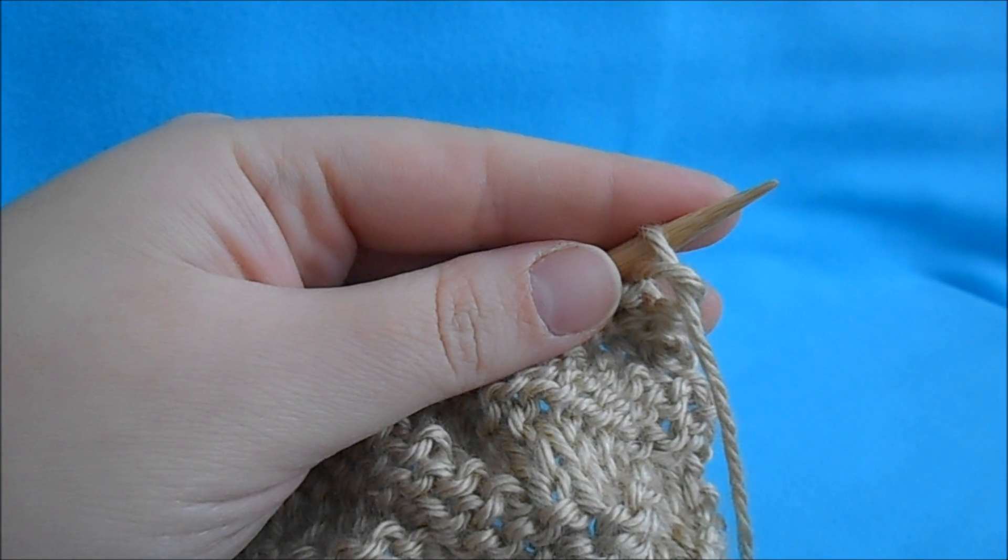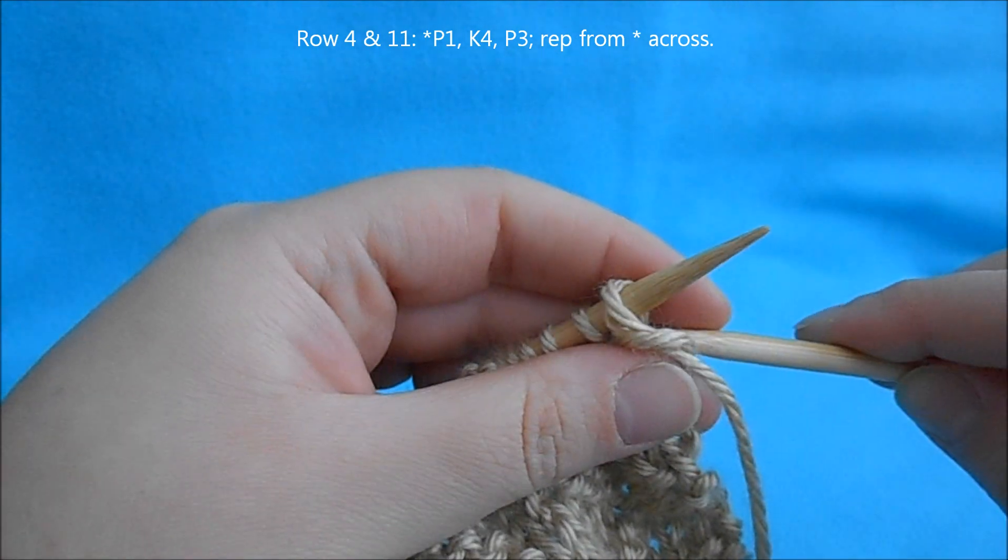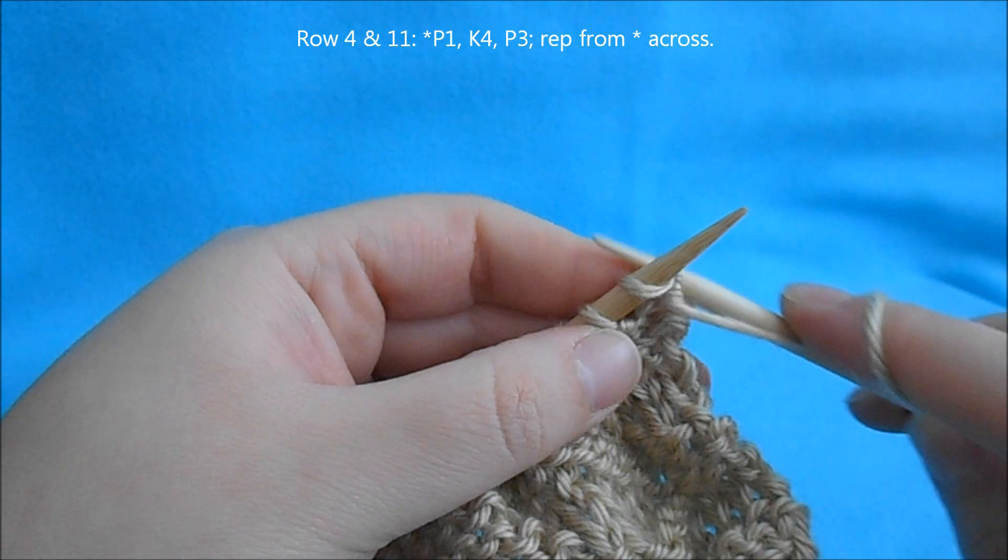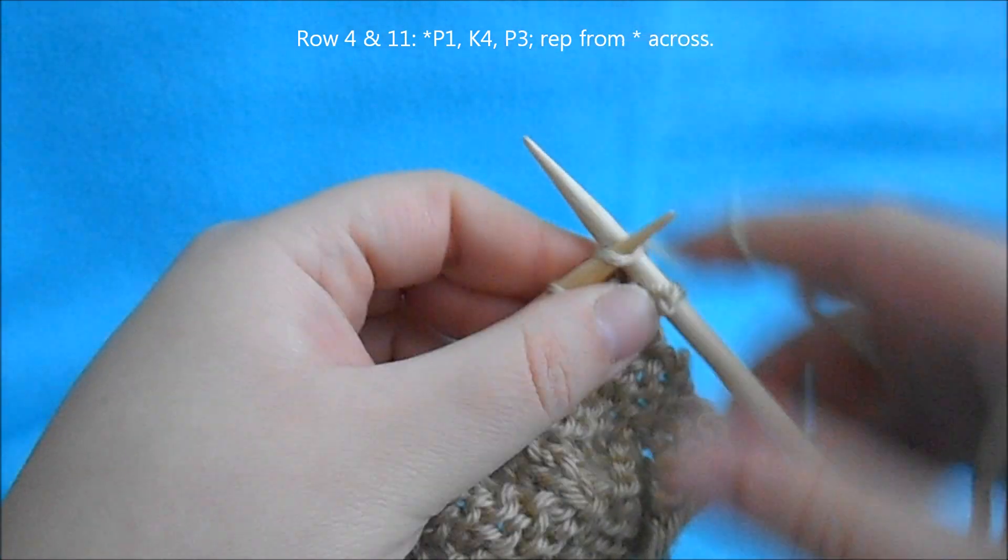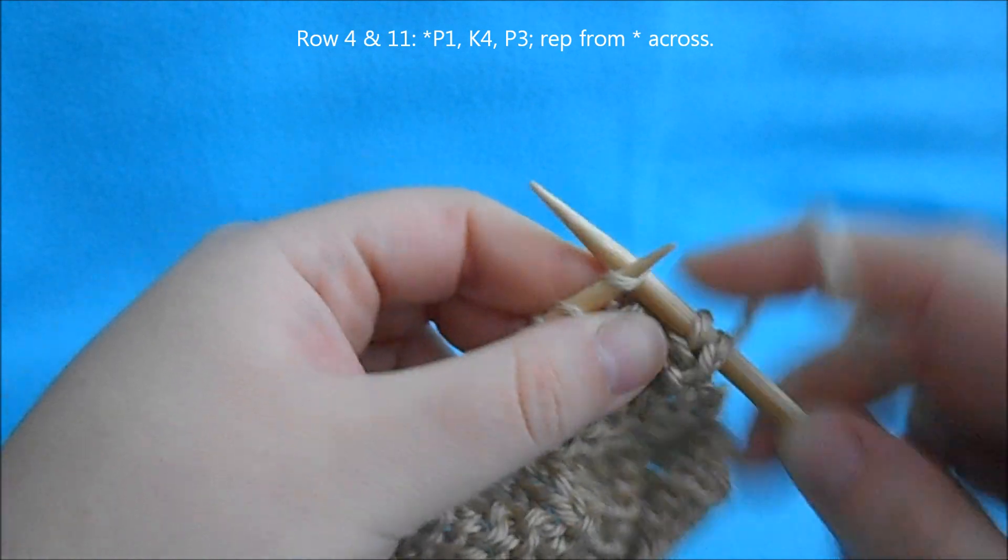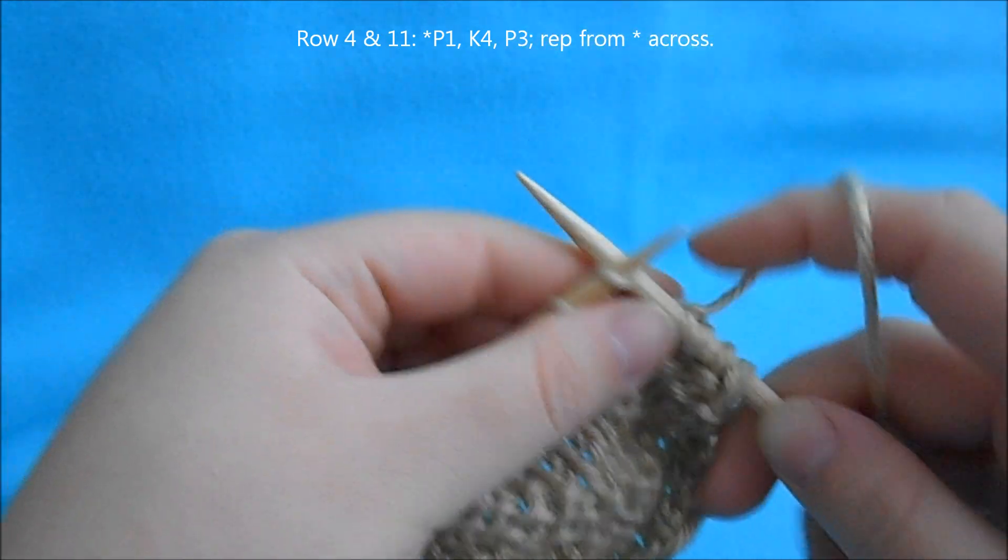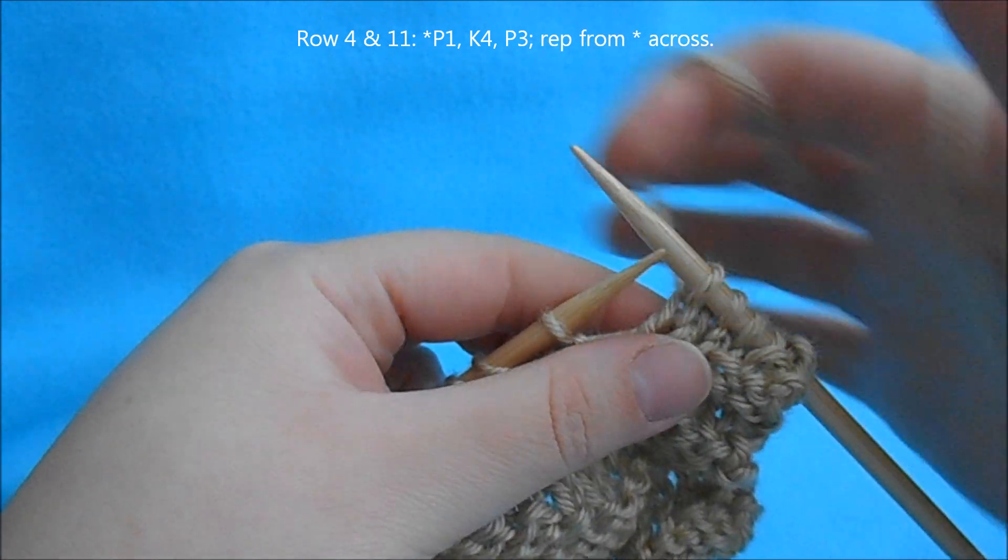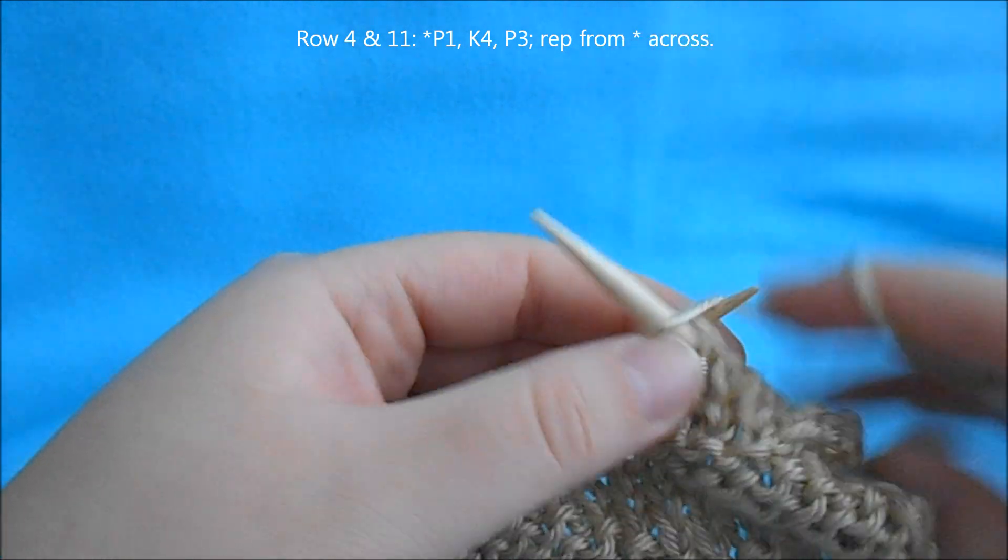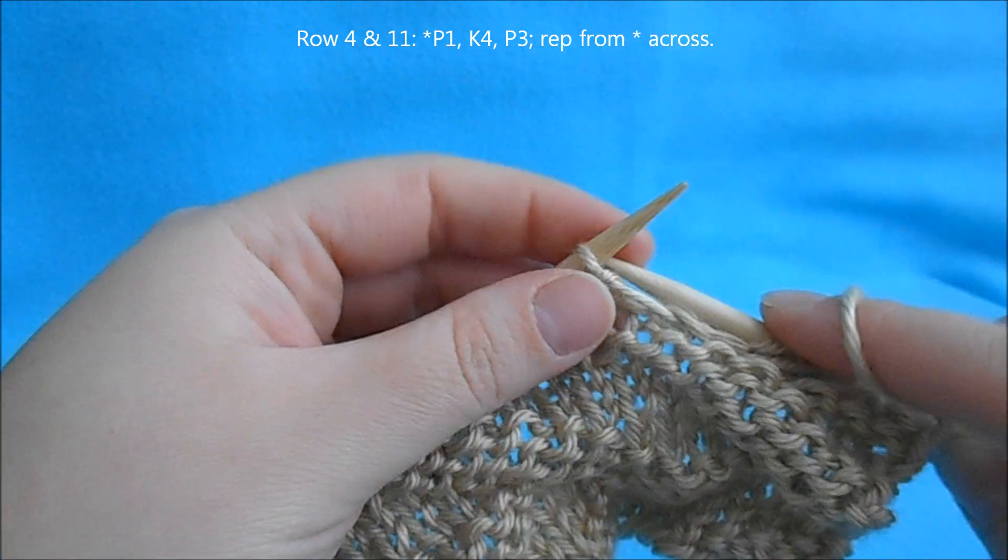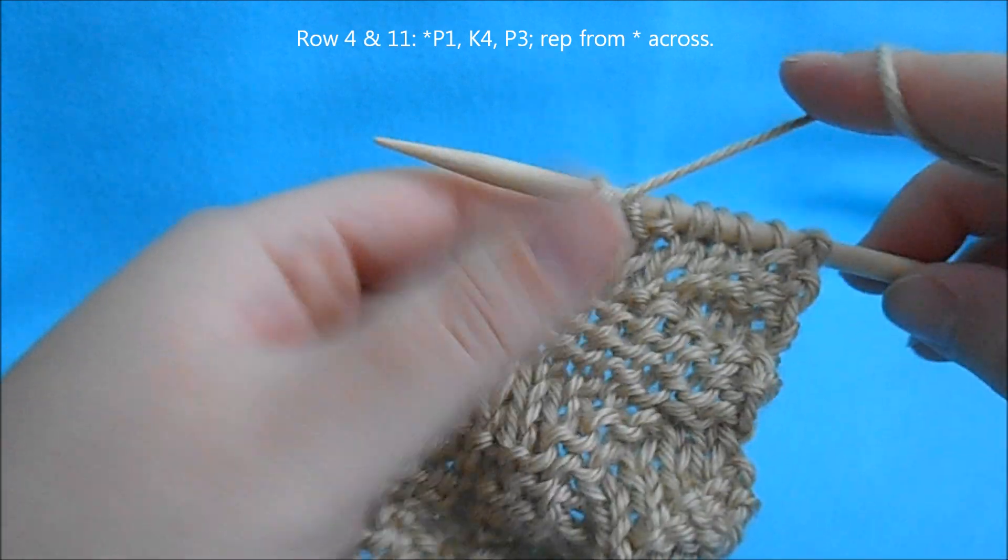For rows 4 and 11, we're going to begin a repeat of purl 1, knit 4, purl 3, and repeat that across.